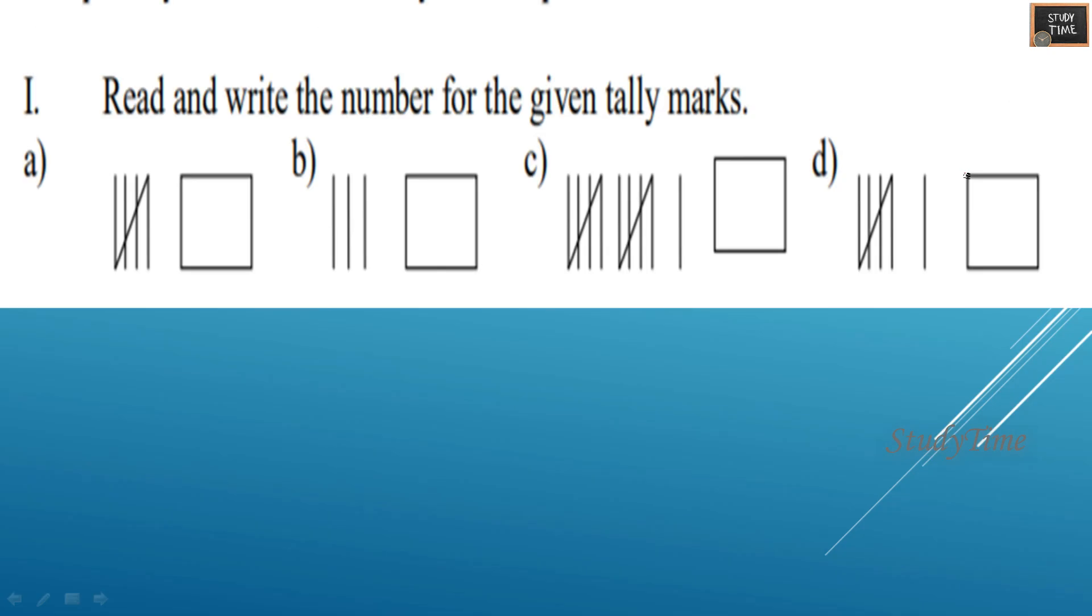Next, read and write the number for the given tally marks. First one it is 5, second one it is 3, and here it is 11, and here it is 6.